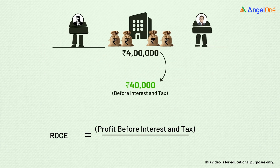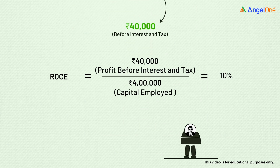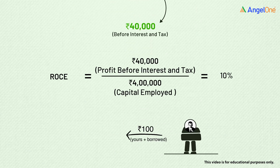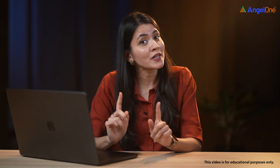Now let's calculate ROCE. It will be profit before interest and tax (PBIT) — in your case 40,000 rupees — divided by capital employed, which is 4 lakh rupees, which comes out to 10%. This means for every 100 rupees invested, the business is generating 10 rupees. That's your return on capital employed.